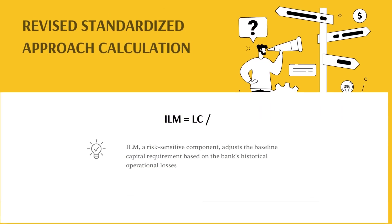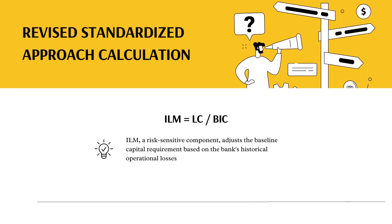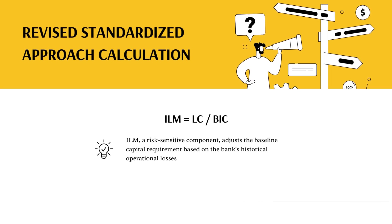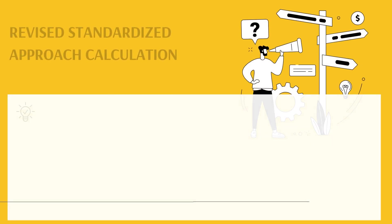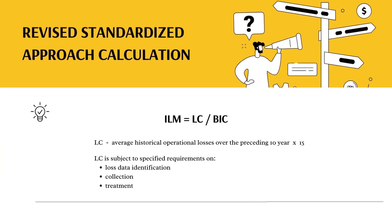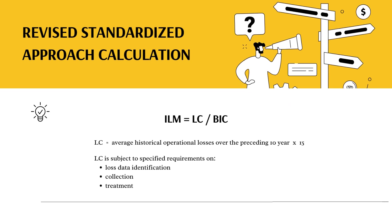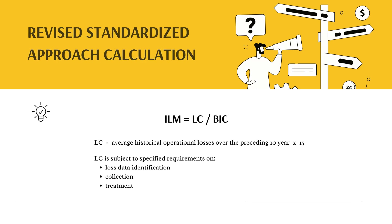The ILM, a risk-sensitive component, adjusts the baseline capital requirement based on the bank's historical operational losses. It is proportional to the ratio of the loss component, LC, to the business indicator component. The LC is determined as 15 times the average historical operational losses over the preceding 10 years, subject to specified requirements on loss data identification, collection, and treatment.